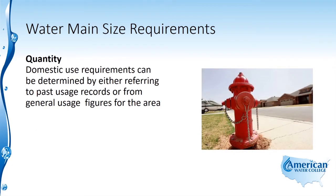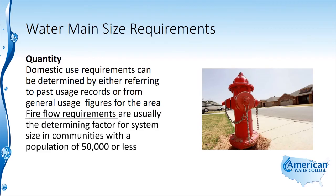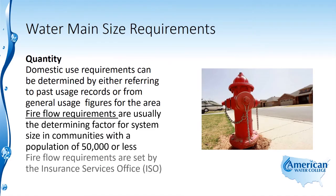Domestic use requirements can be determined by either referring to past usage records or from general usage figures for the area. Fire flow requirements are usually the determining factor for system size in communities with a population of 50,000 or less. Fire flow requirements are set by the Insurance Services Office, or the ISO.